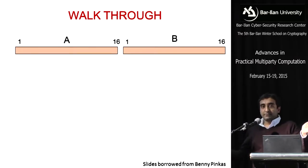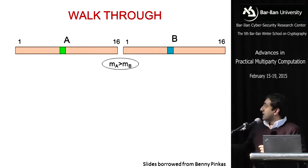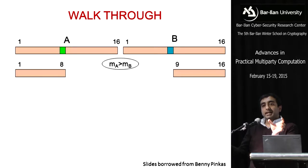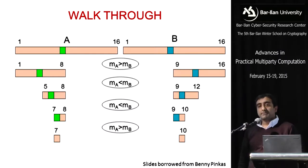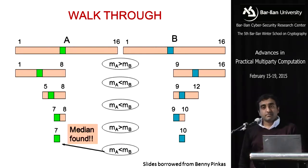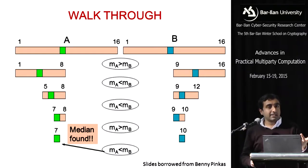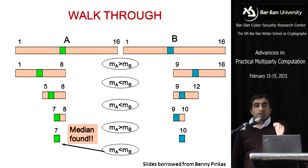I should thank Benny for giving me his slides for explaining this work. Alice and Bob have their set of databases. At each step, Alice and Bob compute the median in their local data set. They compare, and depending on the outcome — in this case MA is less than MB — you recurse into the halves. You iteratively do this, and finally at the last stage you are left with one element that you compare and get the answer. The outcome of the secure comparison is being revealed at each step. So the question is, is this secure?